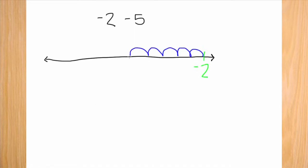Next, jump or move five places to the left. We jump to the left because when we subtract, we're making numbers smaller. Last, mark where you land.